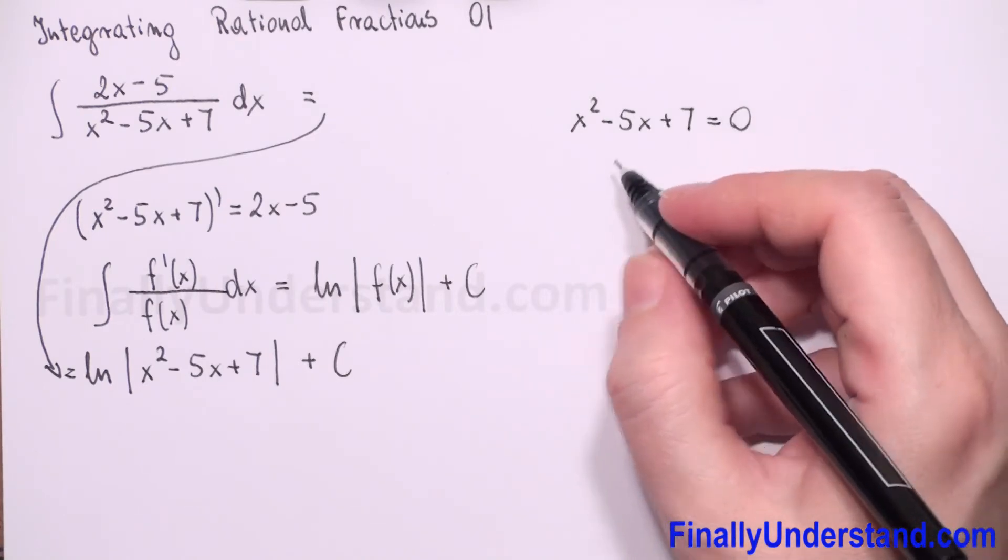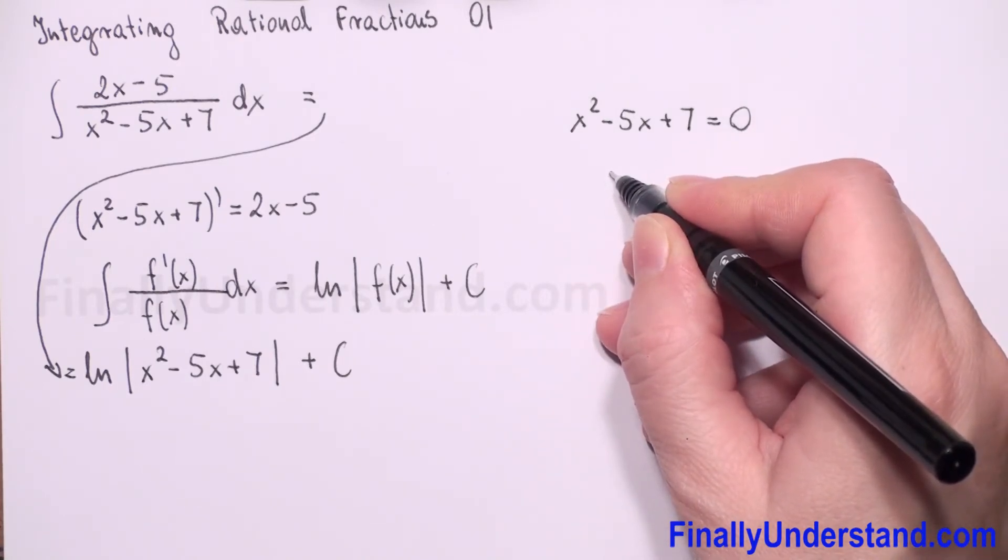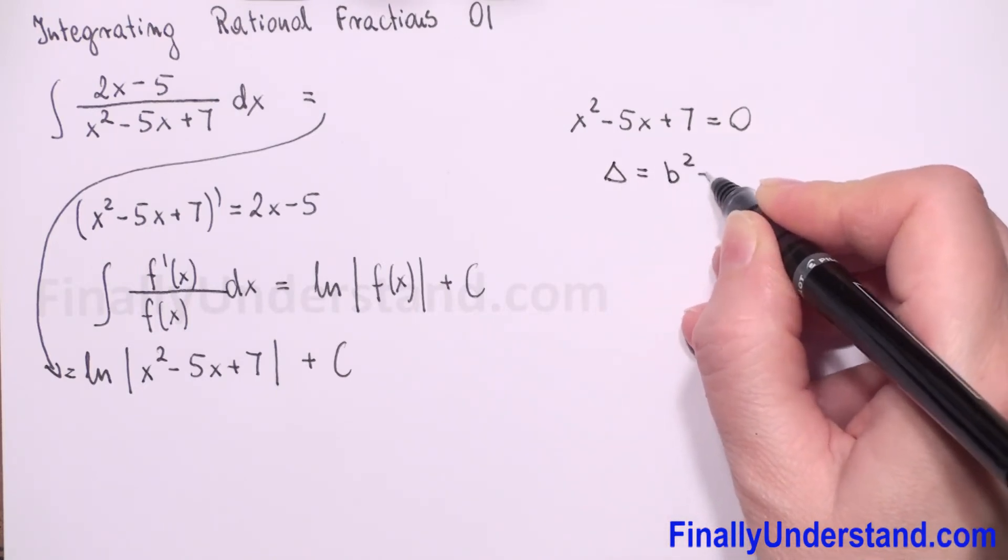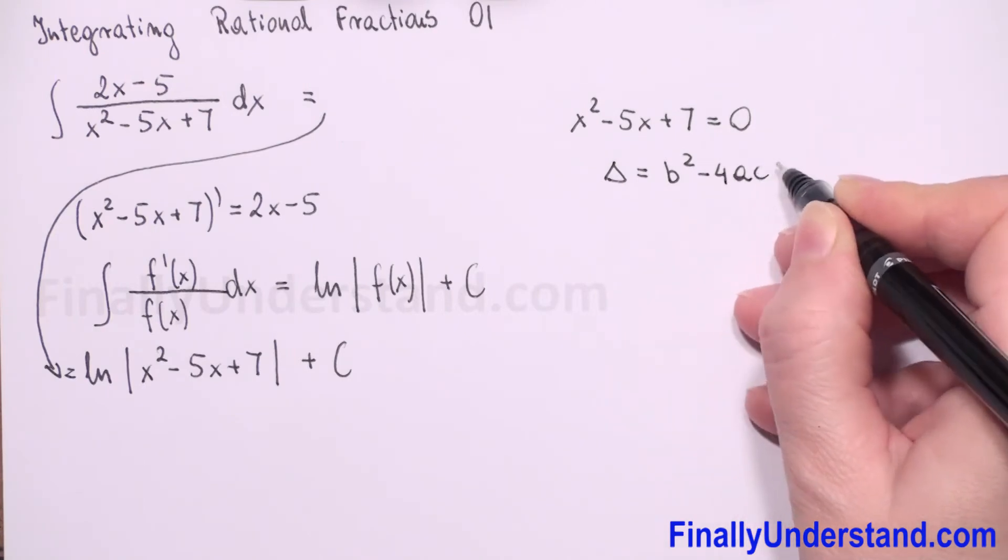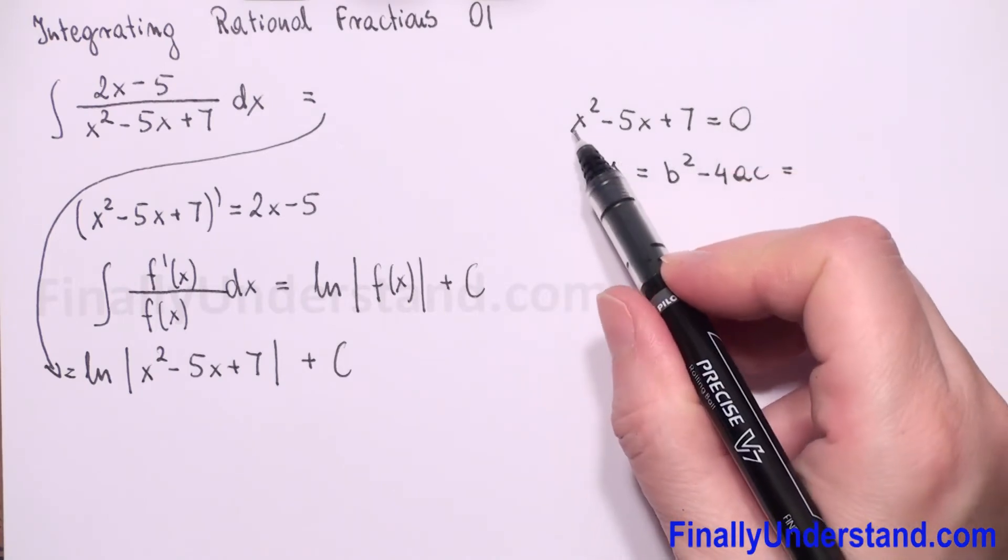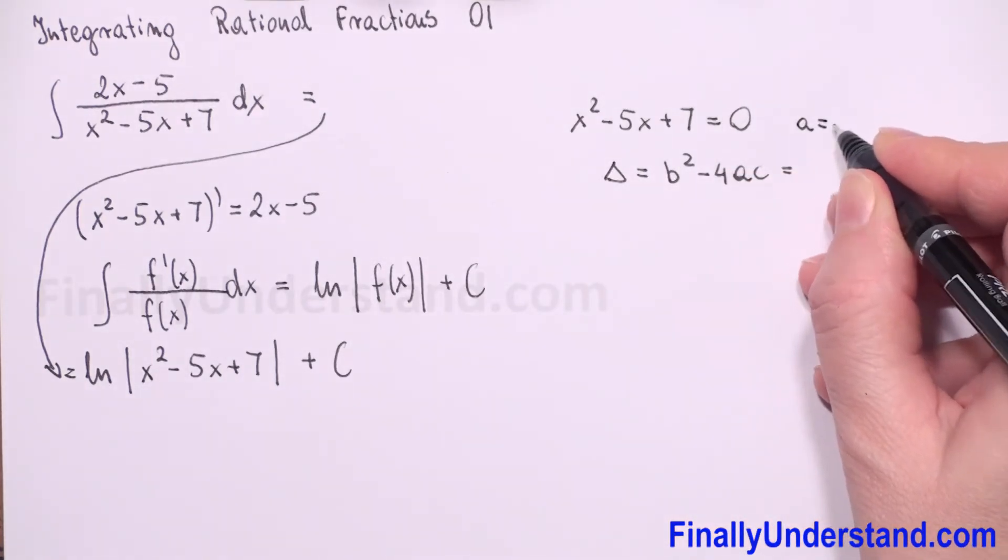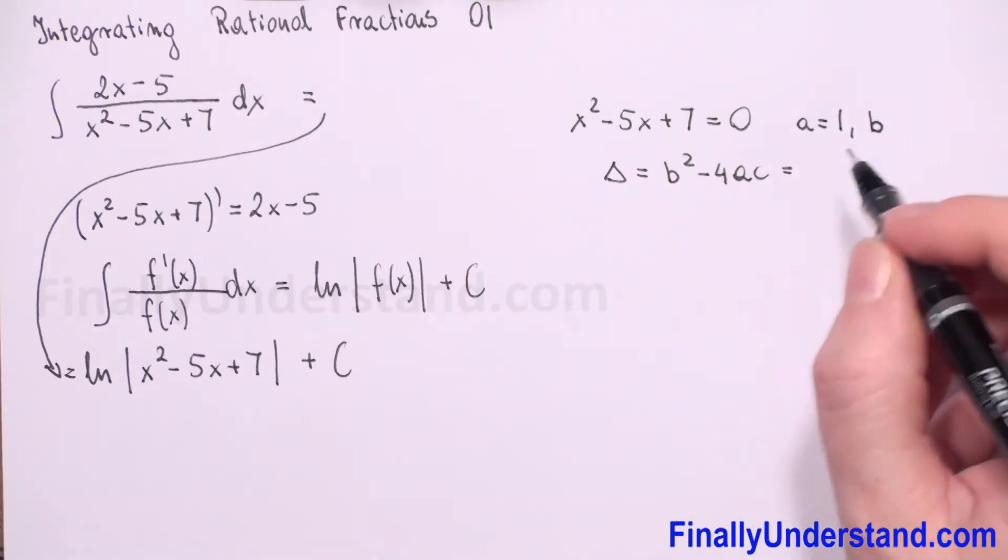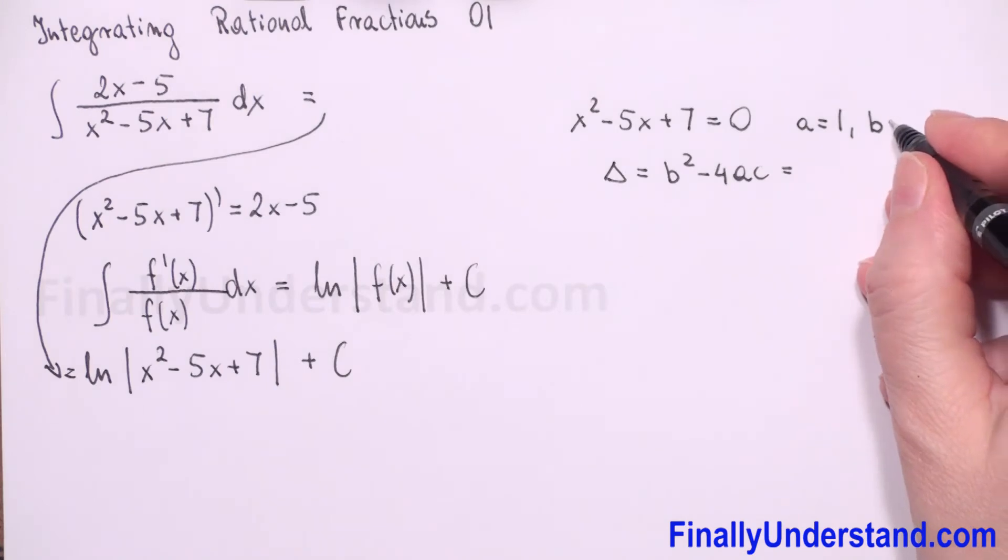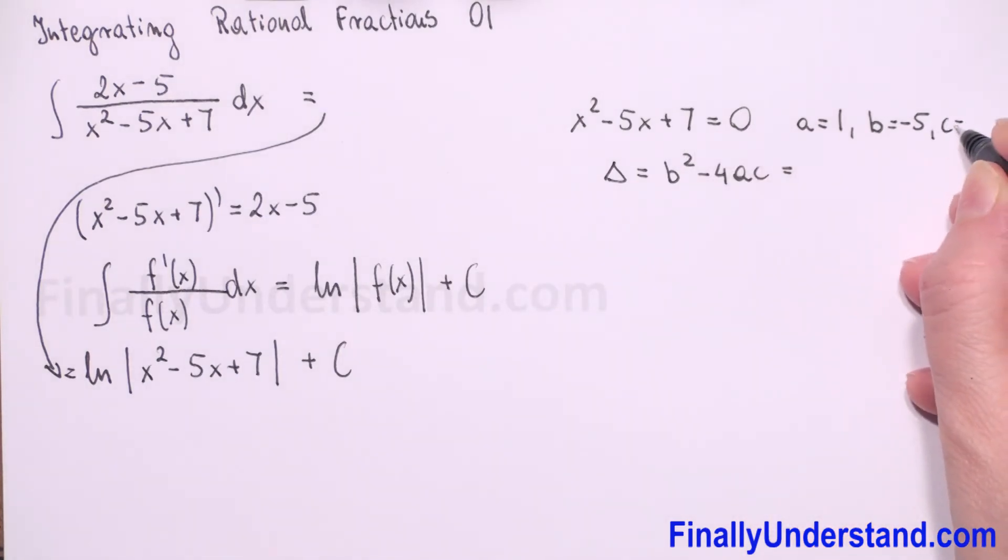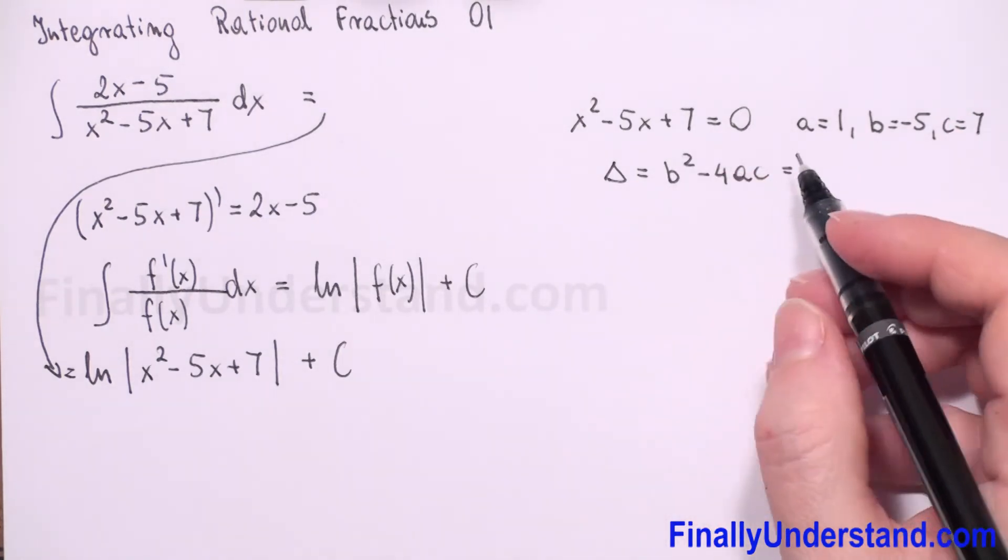We need to find discriminant. Delta is equal to b square minus 4ac. We know that a is coefficient before x square, so we have 1, invisible 1. b is always coefficient before x, so in this example is negative 5, and c is constant, so we have 7. Now we have to just replace.